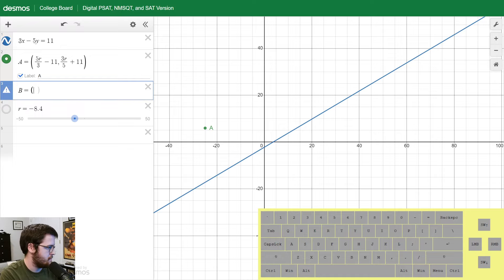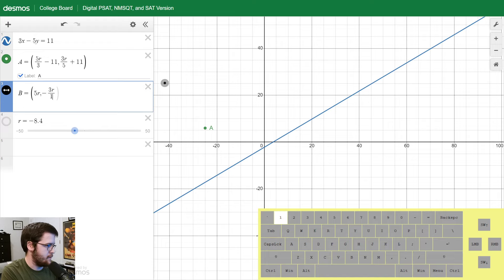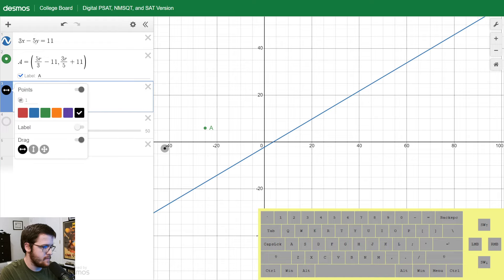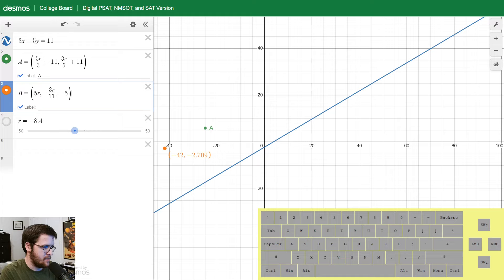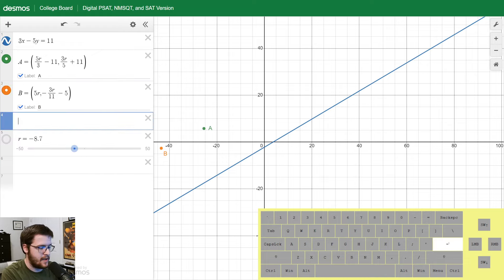B equals 5R, comma negative 3R over 11 minus 5. We'll make it orange, turn the drag off, and label it as capital B. Let's see what happens with the orange point. It certainly seems like that is also a one solution path. It's very clearly crossing the blue line, jumping over. So that is no good.